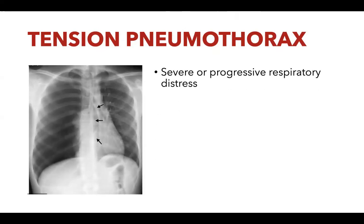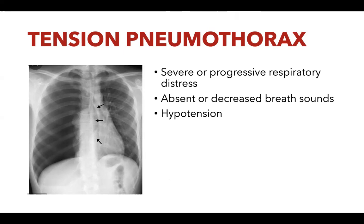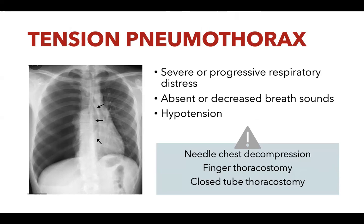Tension pneumothorax presents with severe progressive respiratory distress, absent or decreased breath sounds, and hypotension. The difference between tension and simple pneumothorax is that tension presents with hypotension, making it life-threatening. Management: first perform needle chest decompression, followed by finger thoracostomy, then closed tube thoracostomy.